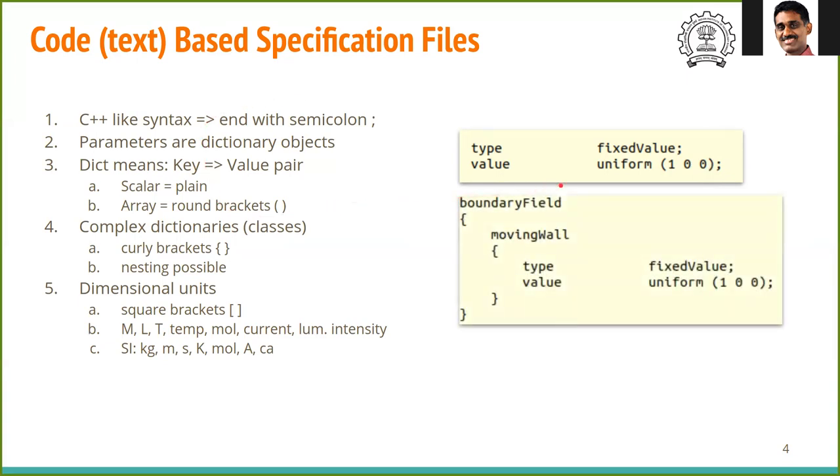These could be nested inside what is known as dictionaries, and dictionaries are themselves represented by curly brackets. For example, these two values are inside a dictionary called moving wall. So the moving wall dictionary has two entities: type and value. If you are familiar with object-oriented programming, you can write this as moving wall dot type has a value fixed value, and moving wall dot value has a value uniform 1, 0, 0.